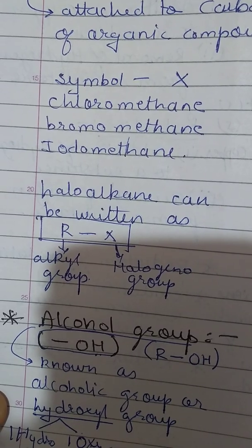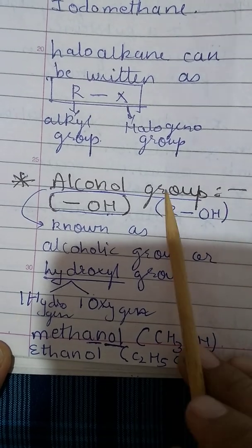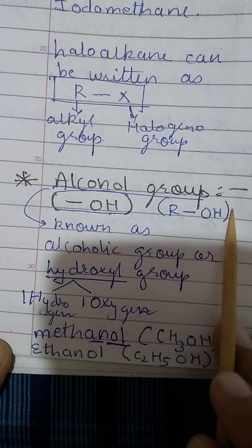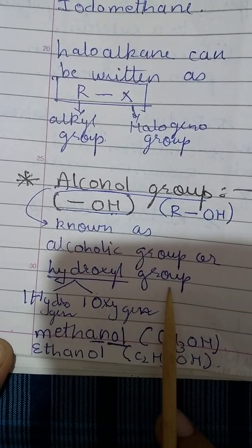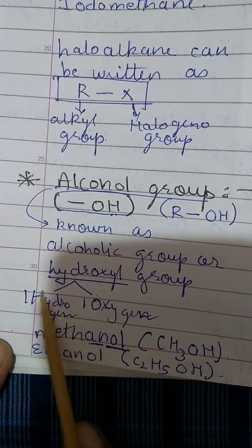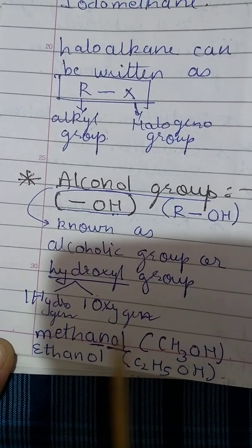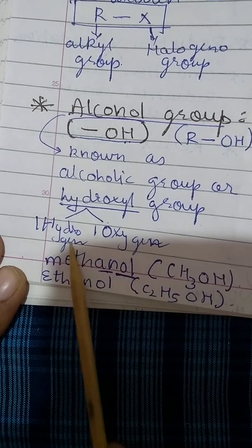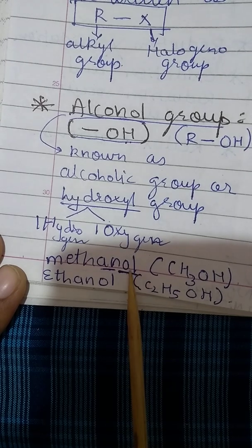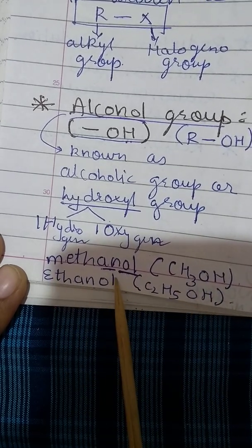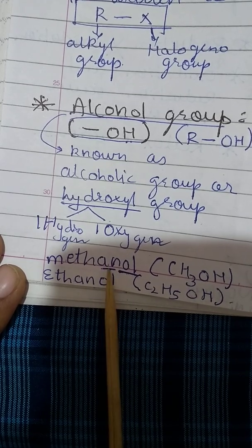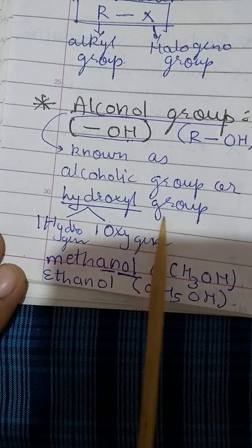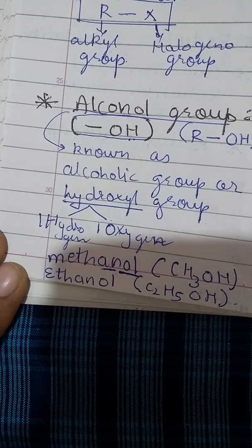The next is the alcohol group. The alcohol group is represented by a dash and OH. When an OH group is added to an organic compound, it is the alcohol group, also written as R–OH. It is also known as the hydroxyl group because it has one hydrogen and one oxygen (OH) added. When naming alcohols, you add 'ol' at the end — for example, CH₃OH with one carbon is methanol, and C₂H₅OH is ethanol.